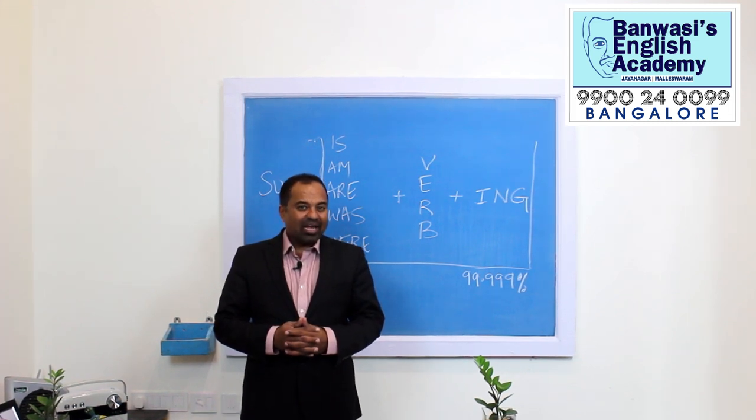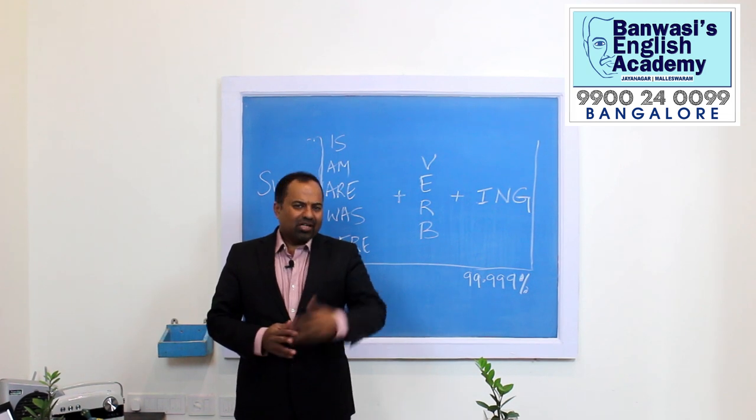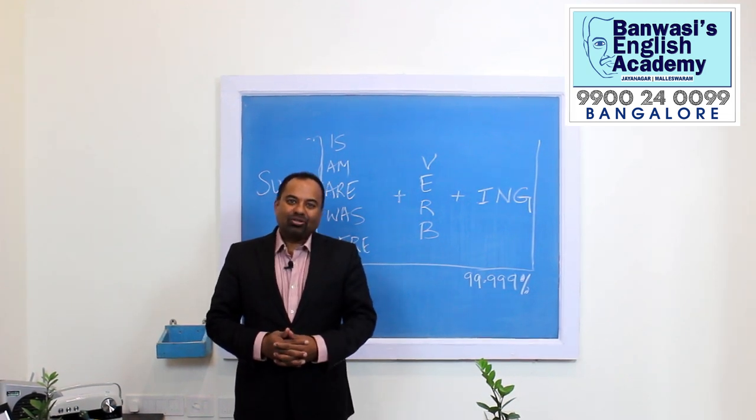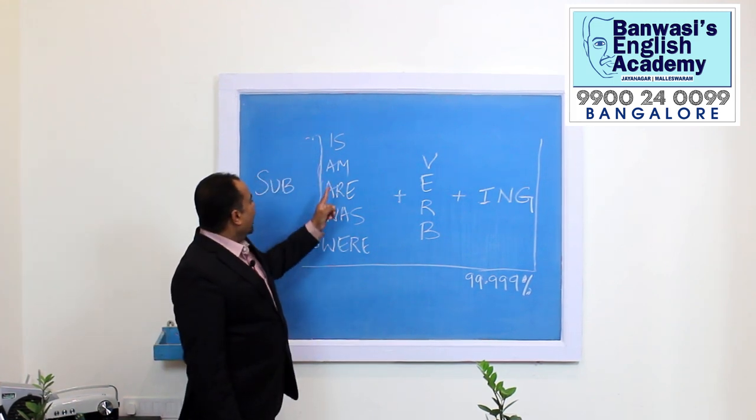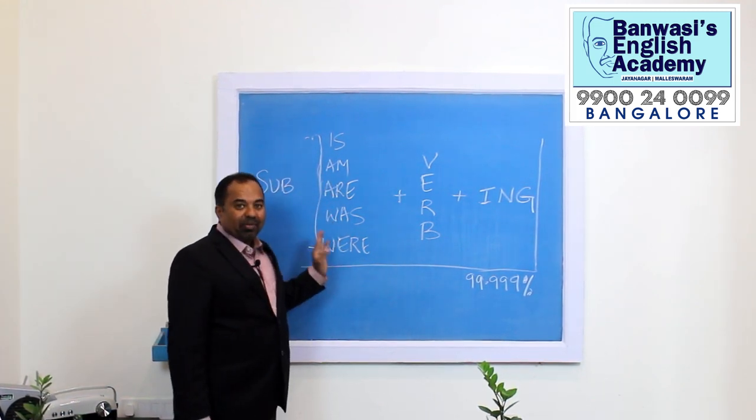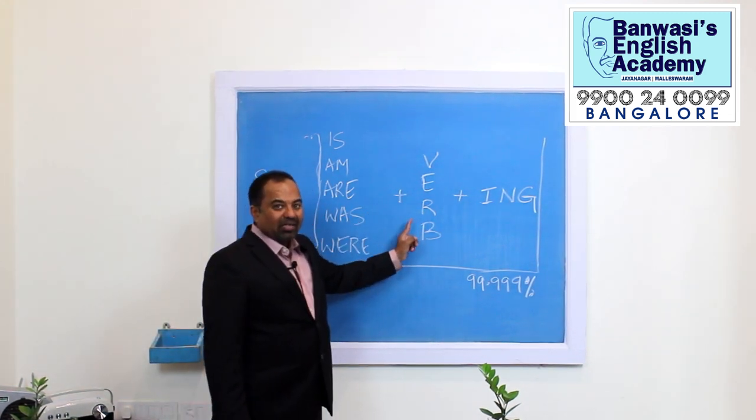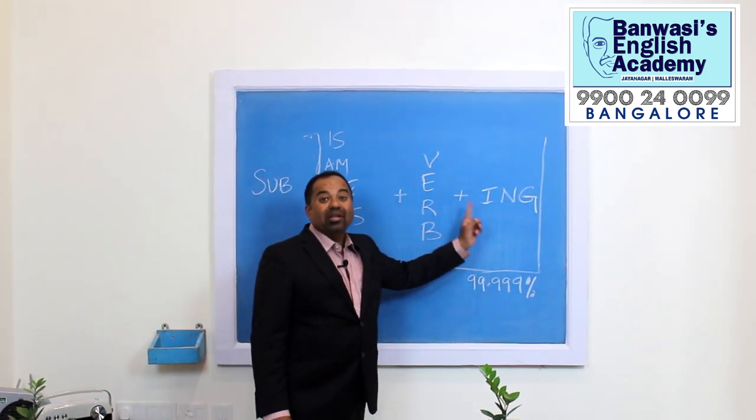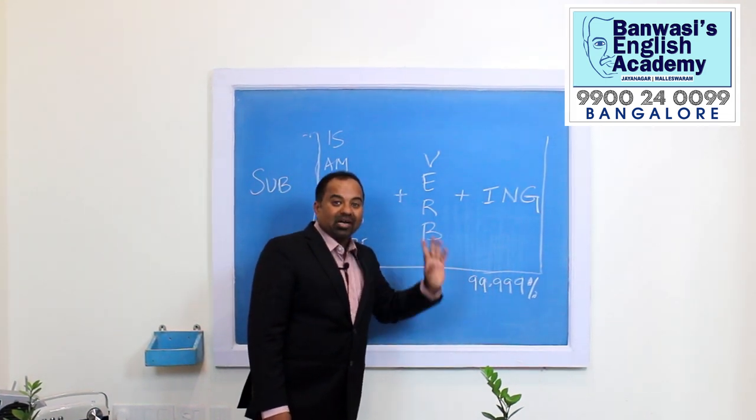Banuasi's Challenge Basic English in 12 Steps Part 2. The second rule is very simple. When you use AM, ARE, WAS, WERE with action verbs, you add ING to the verb. This is 99.999% true.